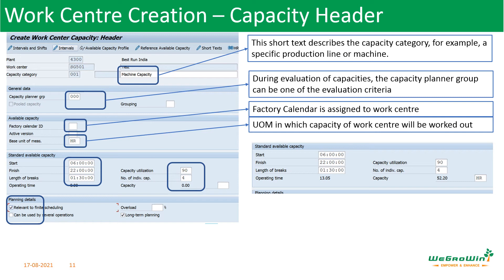Then we have the 'relevant to finite scheduling' checkbox. This means the finite scheduling can be done for this work center's capacity instead of infinite capacity. There is also an overload setting — for example, 5% overload can be allowed; beyond that the system will give an alarm, or we can restrict it from taking additional capacities. Then we have long-term planning — the checkbox enables the system to consider whether the production line is available during long-term planning, which is a simulative planning of material and production.